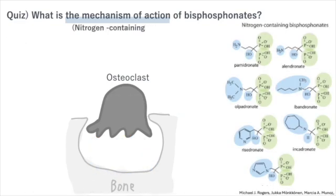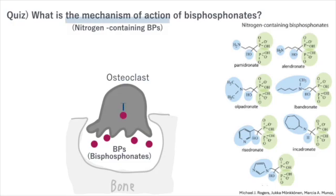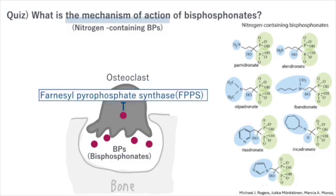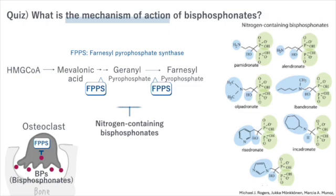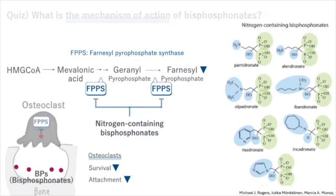Nitrogen-containing bisphosphonates work by inhibiting farnesyl pyrophosphate synthase, an enzyme crucial for the attachment and survival of osteoclasts. By inhibiting this enzyme, nitrogen-containing bisphosphonates prevent the survival and activity of osteoclasts.